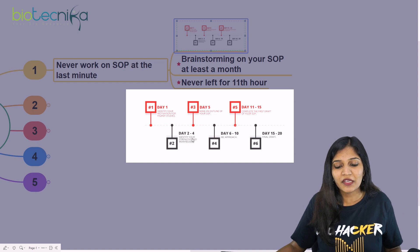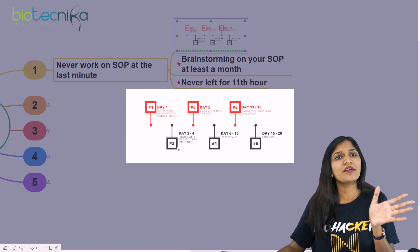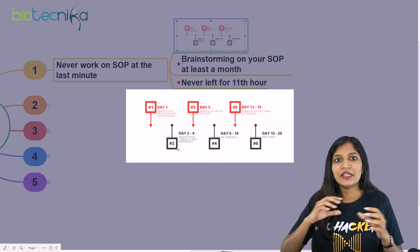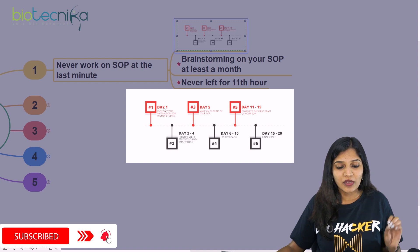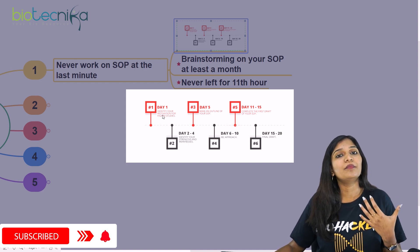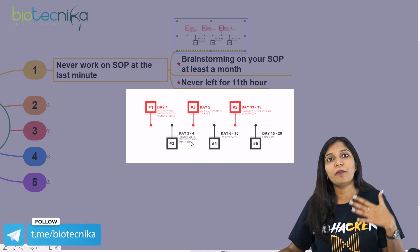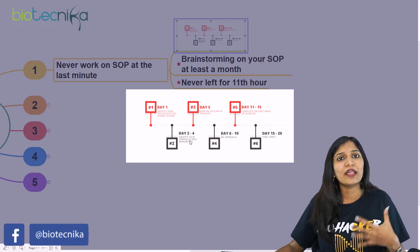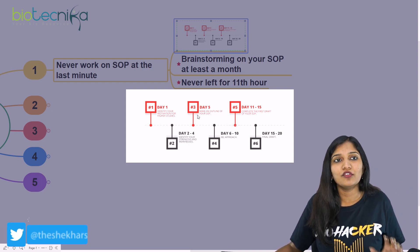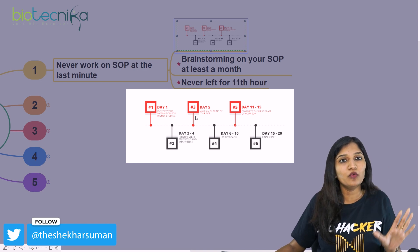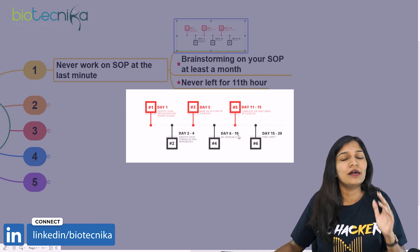From days two to four, think about your strengths and weaknesses and write them as pointers. On day five, make an outline — a blueprint of your SOP. On days six to ten, approach writing your SOP, which is usually one page in three paragraphs. On days eleven to fifteen, complete the first draft.